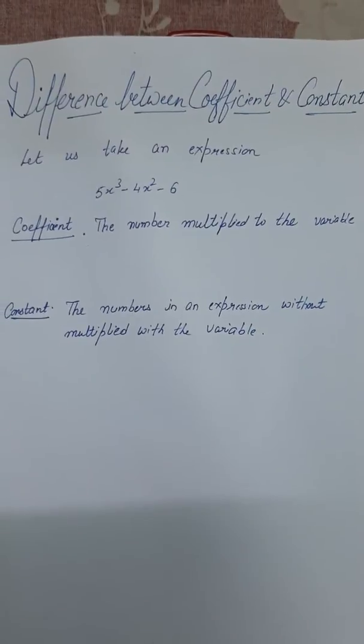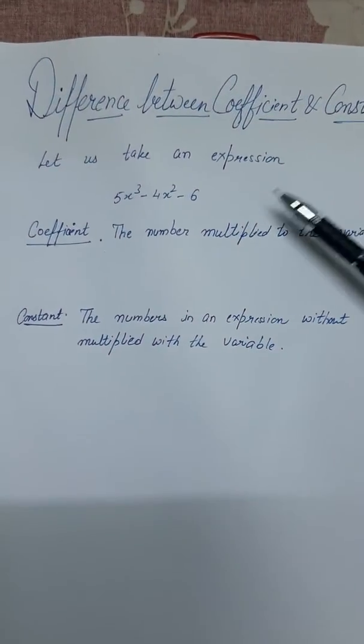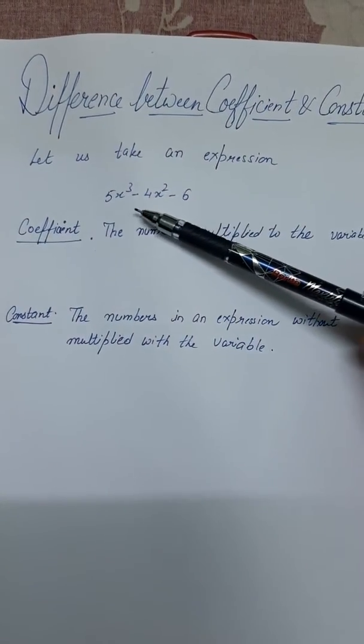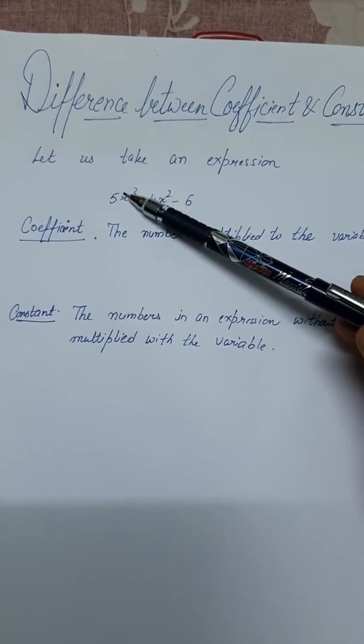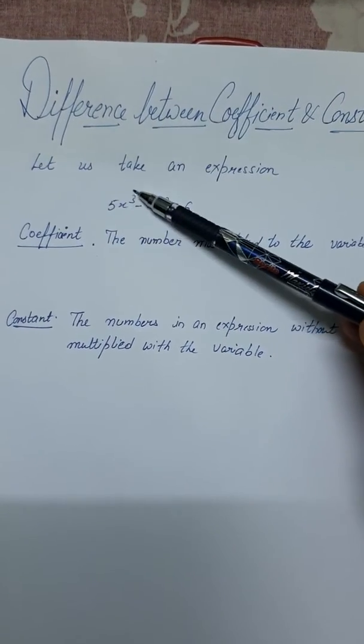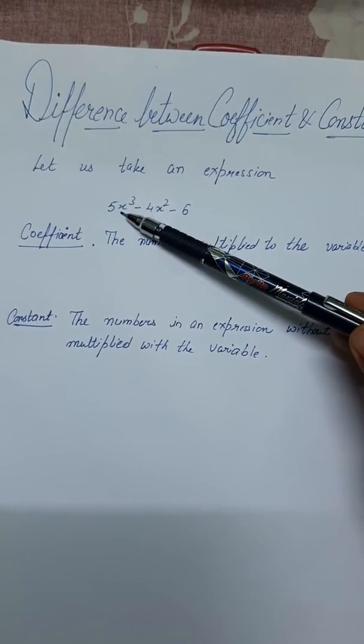So let us take an expression: 5x³ - 4x² - 6. First of all, what is the leading coefficient? Leading coefficient means the highest power variable and the number attached to it.